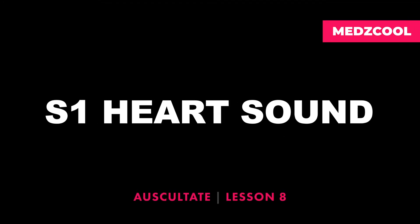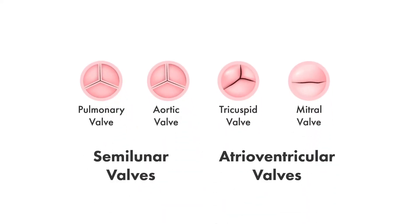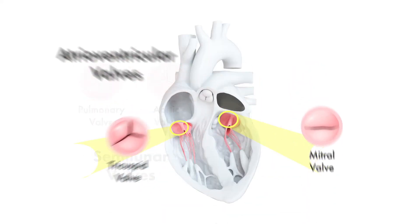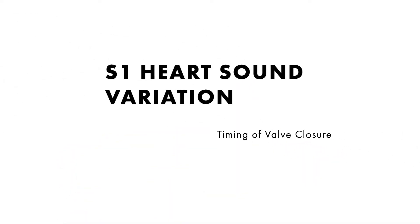In a prior video in this series, we talked about identifying S1 and S2, but keep in mind that there are variations to each of these sounds, some of which are normal and others abnormal. The S1 heart sound is produced by the closure of the atrioventricular valves, and depending on different variables, such as the time in which they close, a person's anatomy, or different physiologic states, the sound of S1 may vary.